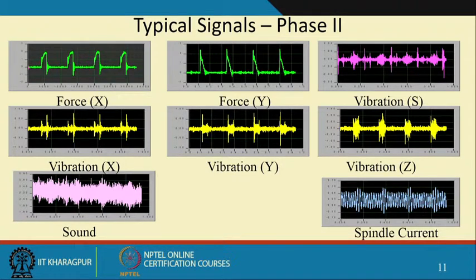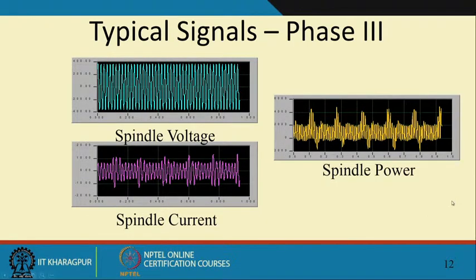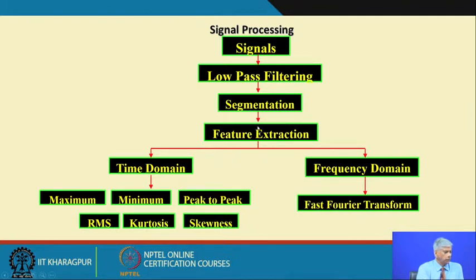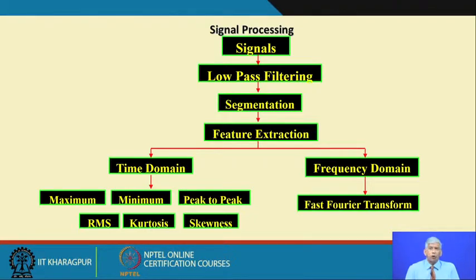Once we get the signals — as I told you in signal domain analysis — whenever we have a signal we extract the features. We did extract the features. We did a lot of filtering to remove artifacts in the signal that were not of interest to us, and we segmented it. Feature extraction was done only in the time domain; we did not even go into the frequency domain, because there is a lot of information in the time domain signal itself since these are pretty much stationary signals with the machine running at constant speed.